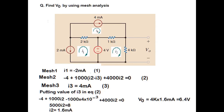The question was to find V0. V0 is I2 multiplied by four kilohms, so four kilohms times 1.6 milliamperes equals 6.4 volts. The supermesh will be covered in the next video.